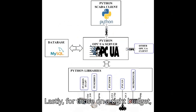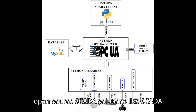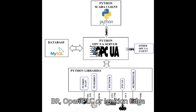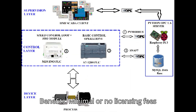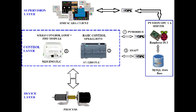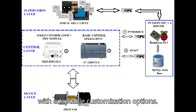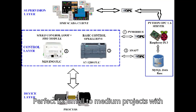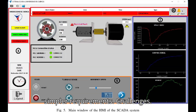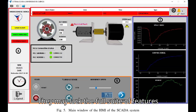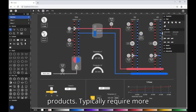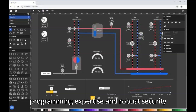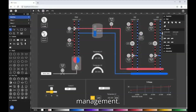Lastly, for those on a tight budget, open-source SCADA solutions like SCADA BR, OpenPLC, or Ignition Edge offer an economical alternative. Benefits: minimal or no licensing fees with adaptable customization options, and they're perfect for small to medium projects with simpler requirements. Challenges: they may lack the full suite of features and technical support found in commercial products, and typically require more programming expertise and robust security management.